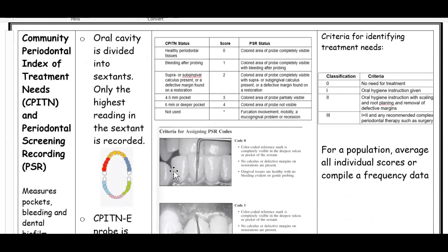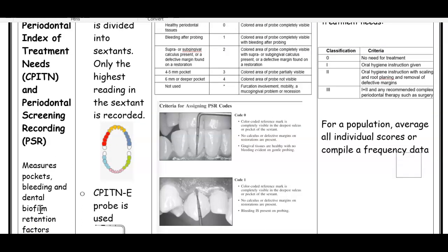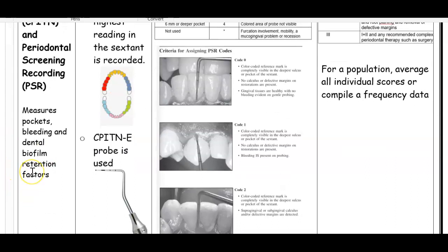The one used now is CPITN, the Community Periodontal Index of Treatment Needs. I'm linking it with PSR because PSR gets incorporated when doing this type of index. This index looks at pockets, bleeding, and plaque, and also retention factors. For retention factors, think about defective margins, overhangs, and things that retain plaque or calculus.